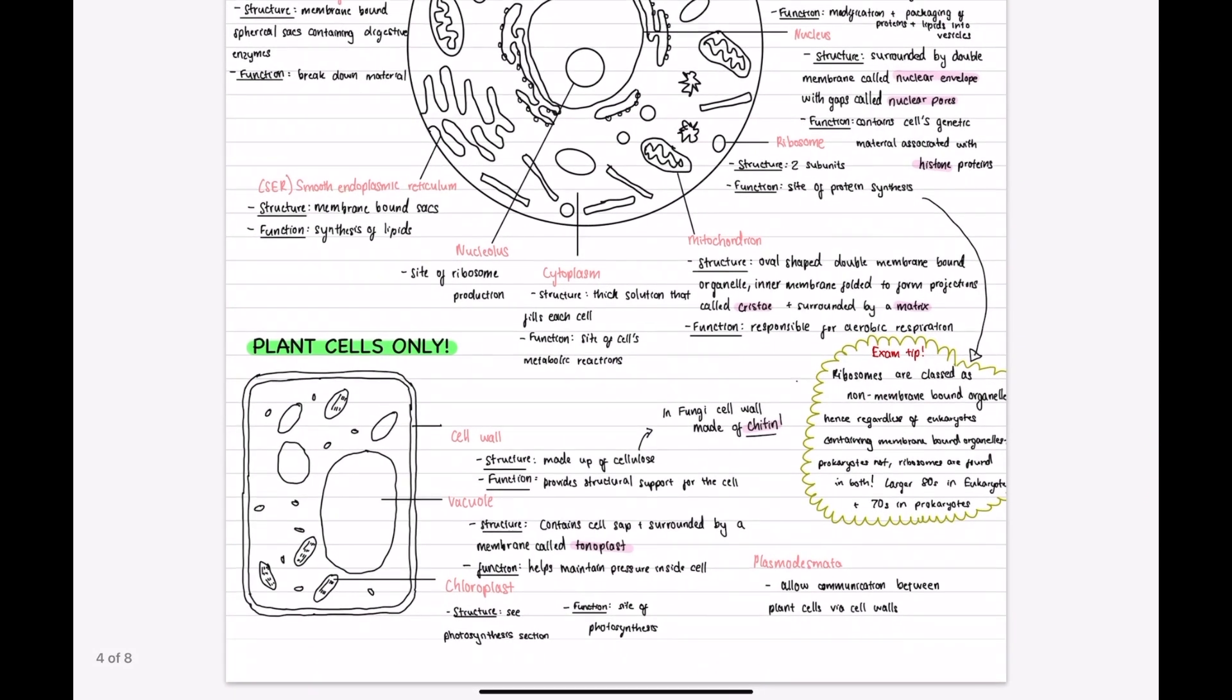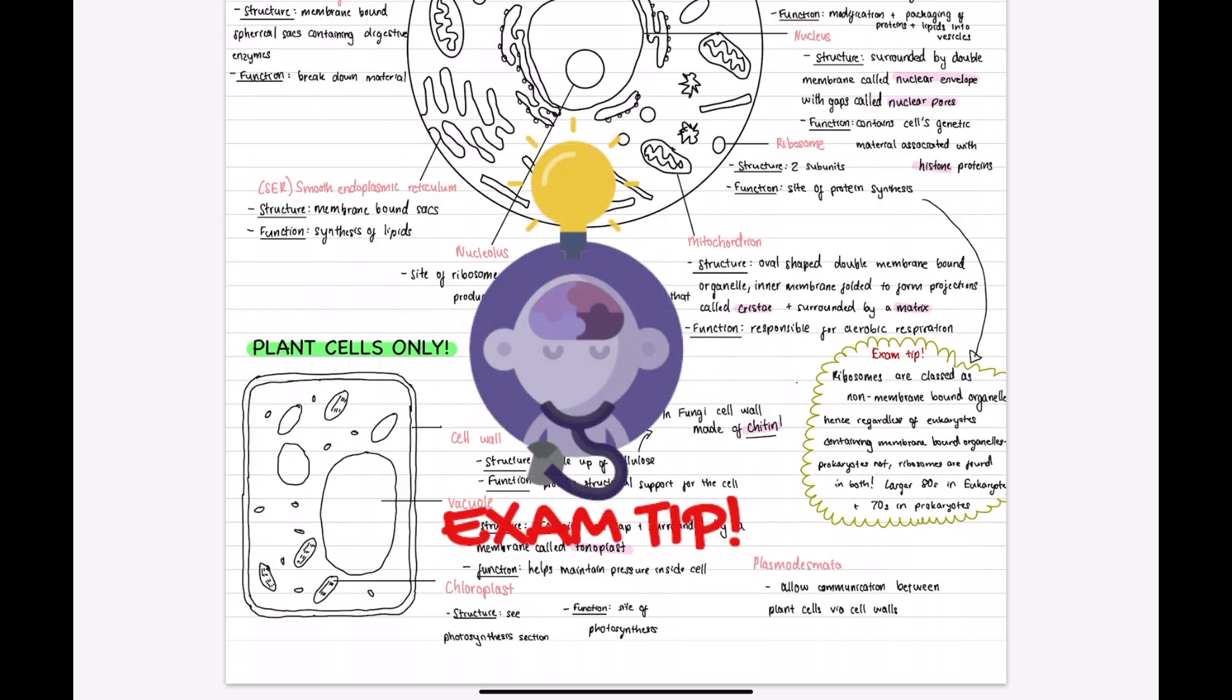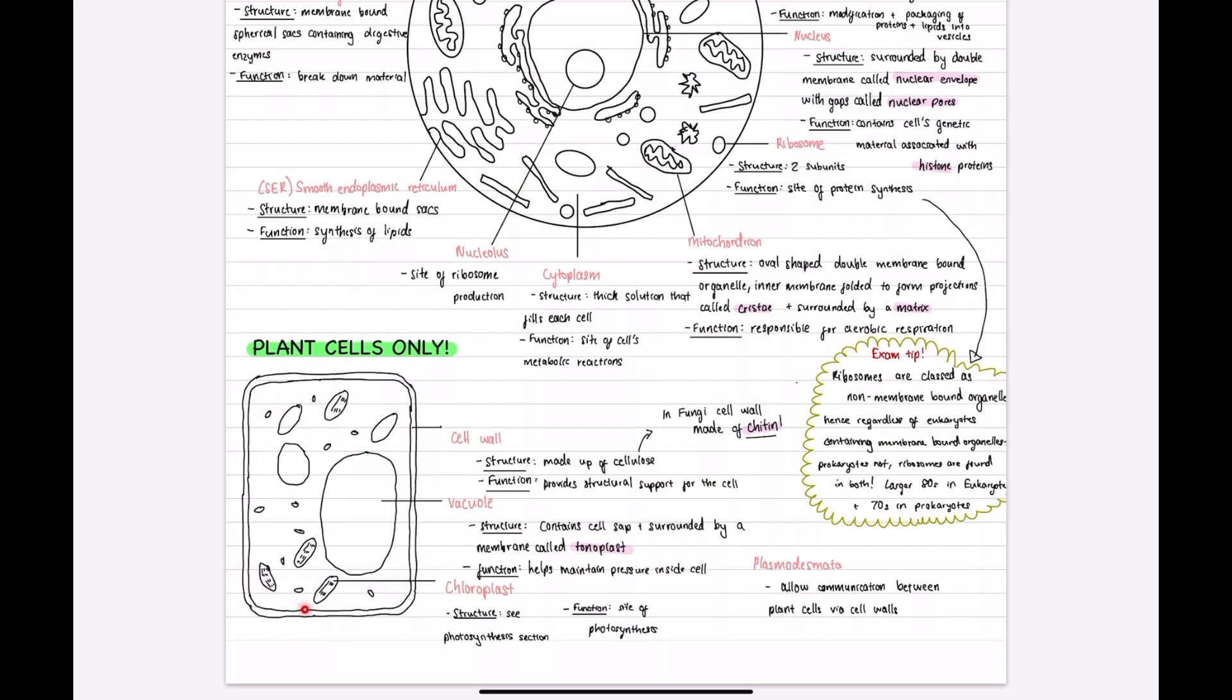Now these extra structures are only found in plant cells. These are important to know for the comparison questions. First we have the chloroplasts which are green round structures that are the site of photosynthesis.